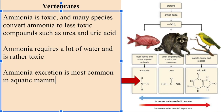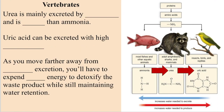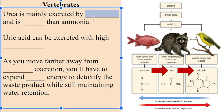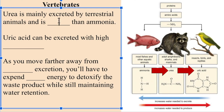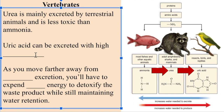Most terrestrial animals, and actually many marine species, cannot afford to lose the amount of water necessary for routine ammonia excretion. Instead, they mainly excrete a different nitrogenous waste product: urea. The main advantage of urea for waste excretion is its very, very low toxicity. The toxicity makeup of an excretory waste is incredibly important.